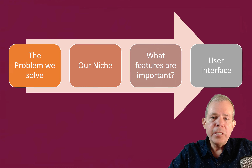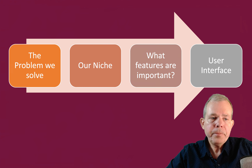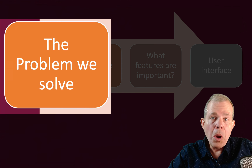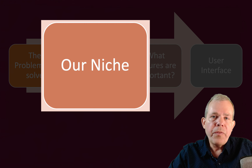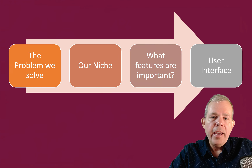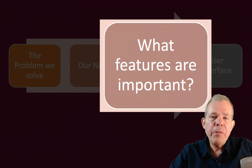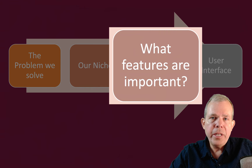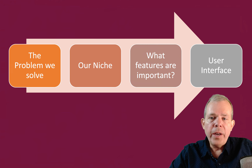Let's get context of where we are in this process. In earlier videos, we talked about the problem we're trying to solve and identifying a solution to a real need. Number two is finding our niche — looking at the competition and finding a place where we're going to succeed. Now we're into the third step: figuring out which user features are really important and which ones can wait, balancing user needs and costs. And then finally, the user interface and experience is where we're going today.